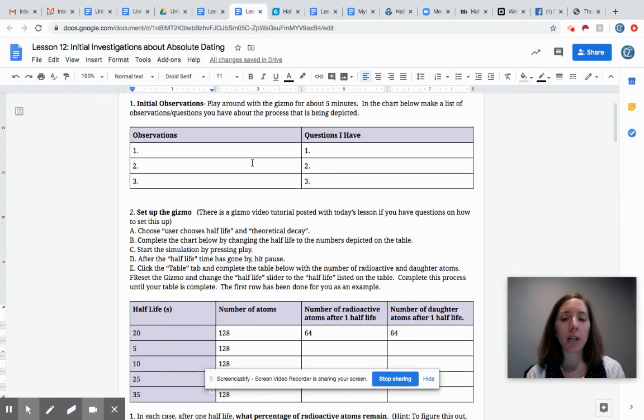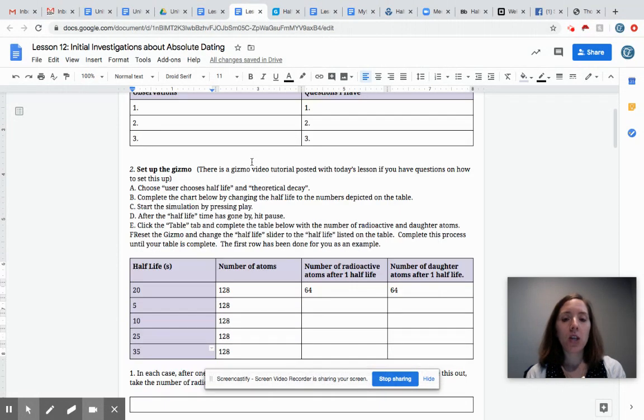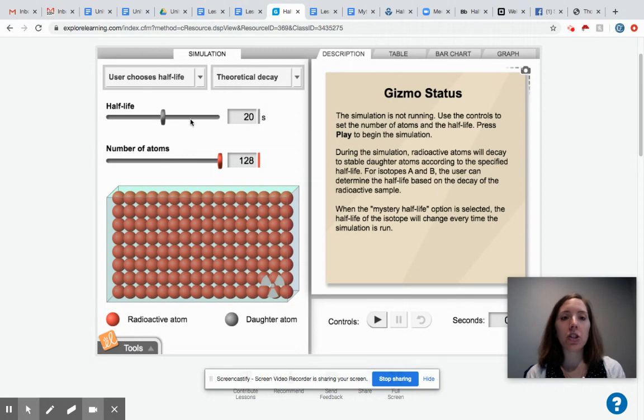Then it says complete the chart below by changing the Half-Life to the numbers depicted on the table. So right now it's at a Half-Life of 20 seconds and I've done the first row for you. So if you look here you have the ability to change the Half-Life time by moving this slider. We're going to start with 20 seconds.